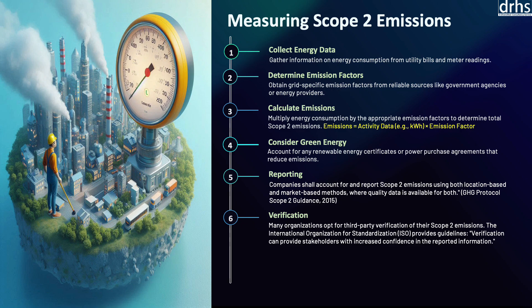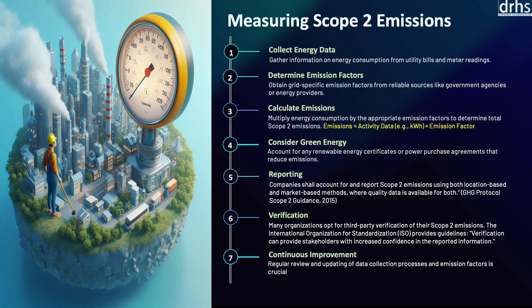The International Organization for Standardization provides guidelines indicating that verification can give stakeholders increased confidence in reported information. The seventh and final step is continuous improvement. Organizations should regularly review their energy use, explore opportunities to improve efficiency, and adopt greener energy sources. This ongoing process involves updating energy procurement strategies, investing in energy efficiency projects, and potentially increasing the share of renewable energy in the energy mix.